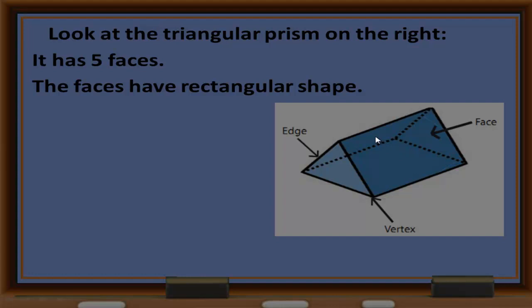The faces have a rectangular shape. This one is colored. Here is the vertex, and here is the edge. It has nine edges.